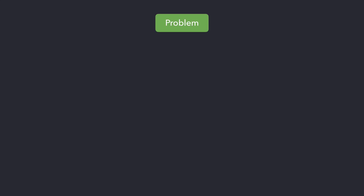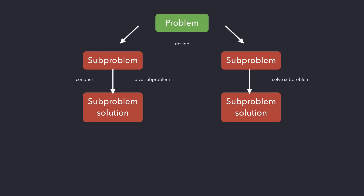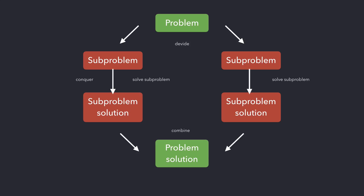We have our problem: we want to search through an array and find the index of a given element. With a divide and conquer approach, we create subproblems of our huge problem — that's the divide part. Then we solve these subproblems, which is the conquer part, because solving subproblems should be simpler than the original problem. Finally, we combine all the solutions to get the solution to our original problem.